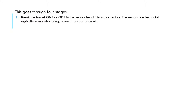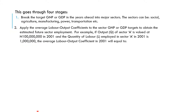First, you have to break the Target GNP or GDP in the years ahead into four major sectors. These four major sectors are: social, agriculture, manufacturing, power, and transportation, and so on. You have to break them into major sectors because if you don't, you will not be able to know what should be attributed to what — looking at the GNP (Gross National Product) and the GDP (Gross Domestic Product), and which sector requires which amounts.